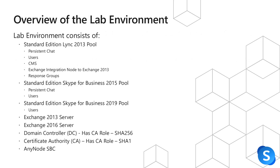When we look at the lab environment, we need to see exactly what we are dealing with. This lab environment consists of a standard edition Lync 2013 pool that has the persistent chat role, a few users homed in it, the central management store, and it is also the Exchange integration node to Exchange 2013, and is home to the response groups. There's also a standard edition Skype for Business 2015 pool that has persistent chat and a few users assigned to it. There's also a 2019 pool, which is where we're going to eventually move most of the roles. And then we also have an Exchange 2013 and 2016 server.